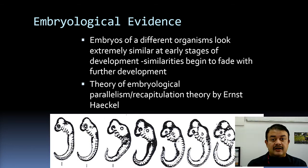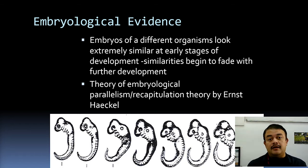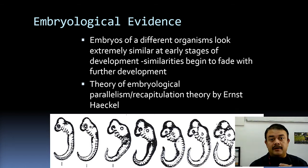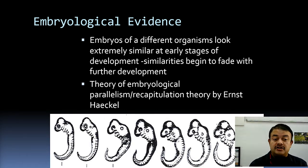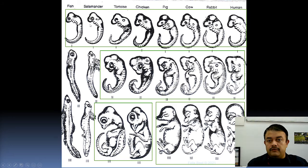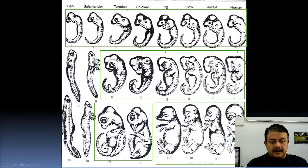Embryological evidence, which we already discussed in the context of recapitulation theory: embryos develop in ways similar to how organisms evolve. Different organisms look extremely similar at early stages of development, and similarities fade with further development, because the genes involved in developmental pathways — like Hox genes — are highly conserved. This is embryological parallelism or recapitulation theory by Ernst Haeckel. For example, fish, salamander, tortoise, chicken, pig, cow, rabbit, and human embryos are nearly indistinguishable in early weeks.